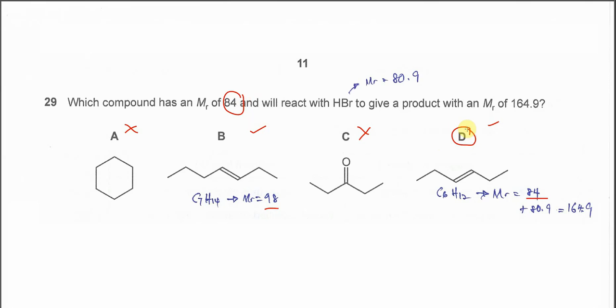And of course after this hexene reacts with HBr, the HBr is added to this alkene. So eventually it will add 80.9, so it will become 164.9. Therefore the answer is confirmed to be D.